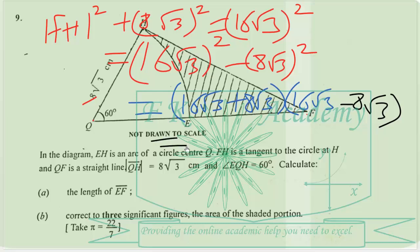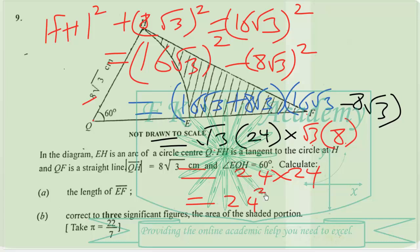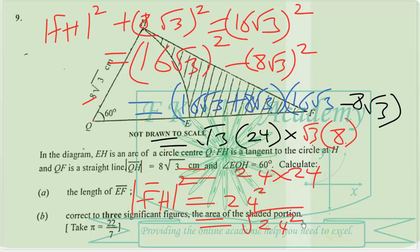When we simplify, we obtain root 3 times 24, multiplied by root 3 times 8. So root 3 times root 3 is 3, times 8 is 24, times 24, giving us 24 squared. Therefore FH squared equals 24 squared, so FH equals 24 centimeters.